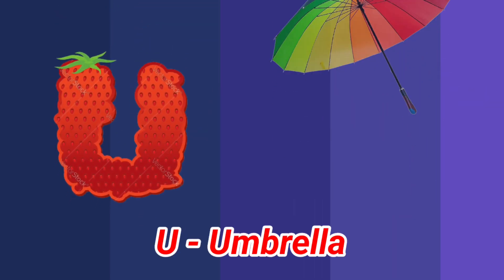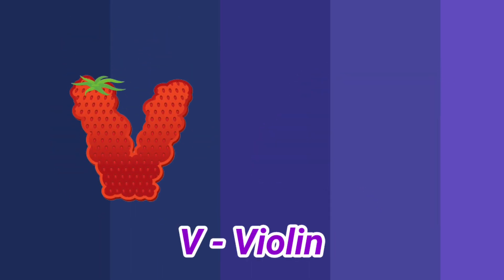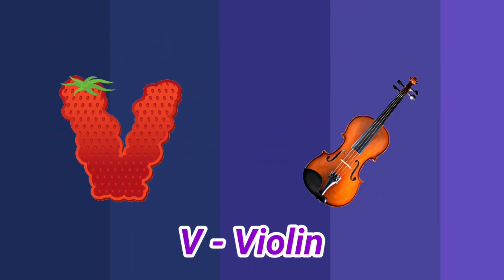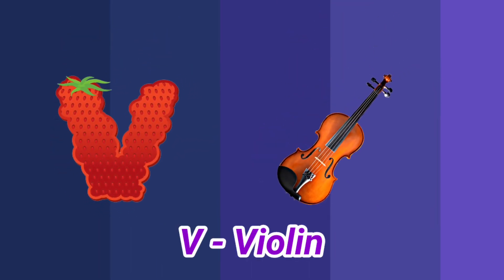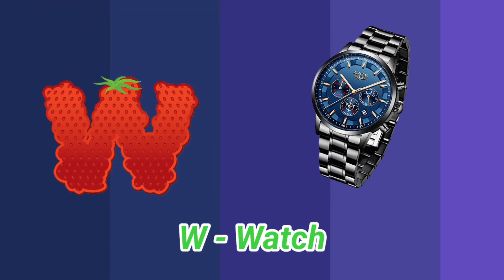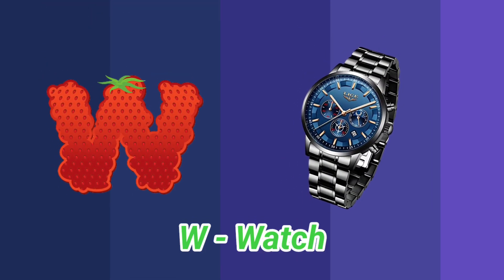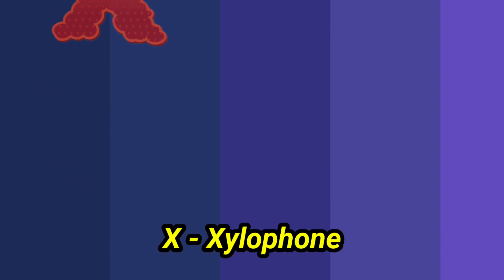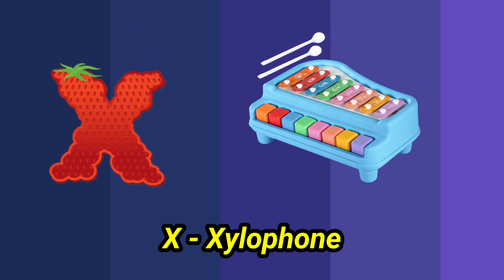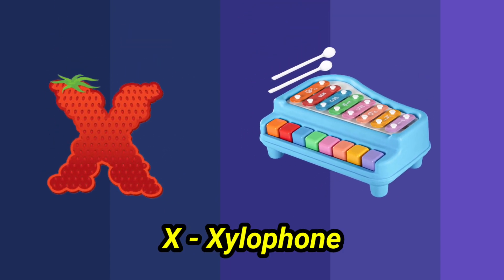U is for umbrella, u-u-u-umbrella. V is for violin, v-v-violin. W is for watch, w-w-watch. X is for xylophone, z-z-xylophone.